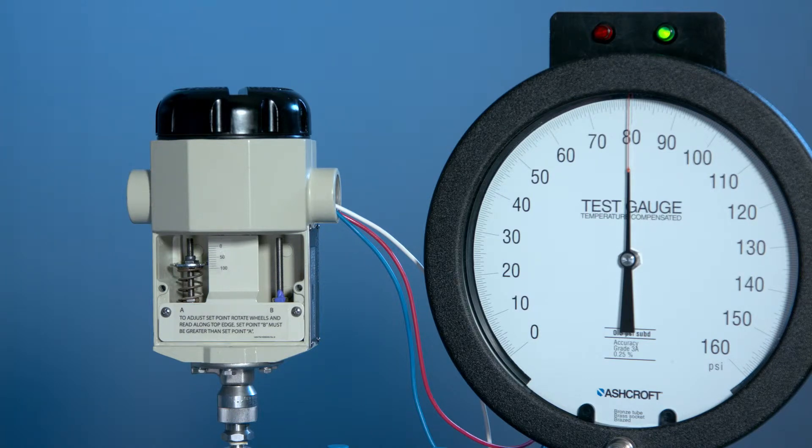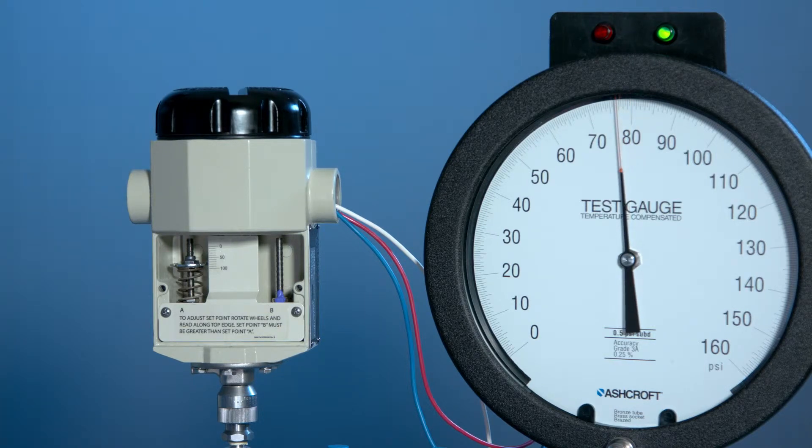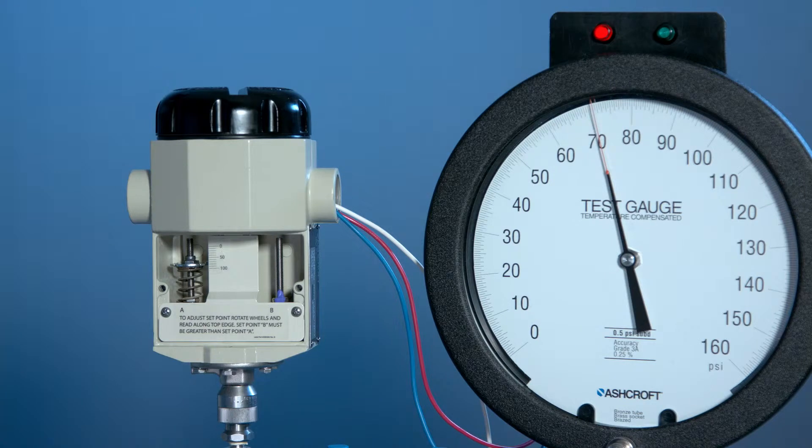Now we'll lower the pressure and measure the point at which it turns off. When the light turns back to red, this will be the deadband of the switch. We slowly lower the pressure just till it turns off and then we measure that point, which is approximately 71.5. So the deadband would be 80 minus 71.5, or 8.5.